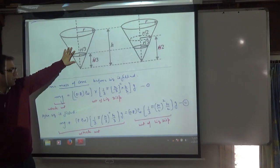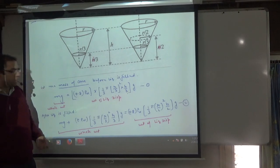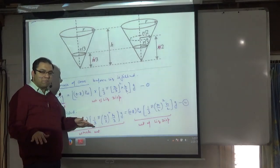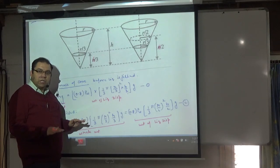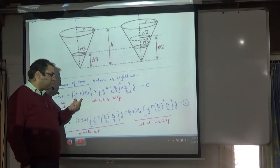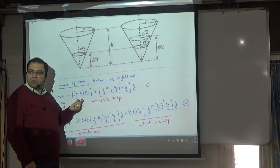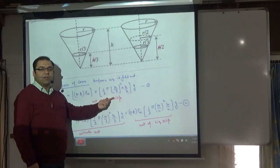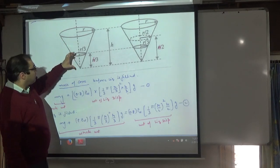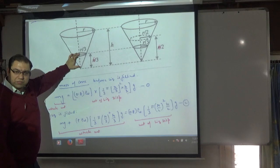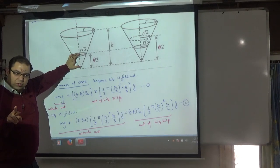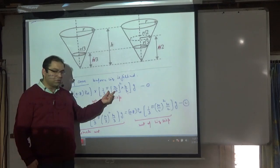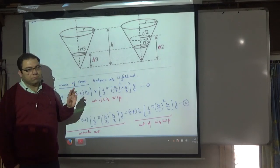The weight of liquid displaced: the first liquid has density 0.8 times density of water. The volume submerged is the cone portion of height H/3, so the volume is (1/3)π(r/3)²·(H/3), multiplied by 0.8 for the liquid density. This gives the buoyancy equation.